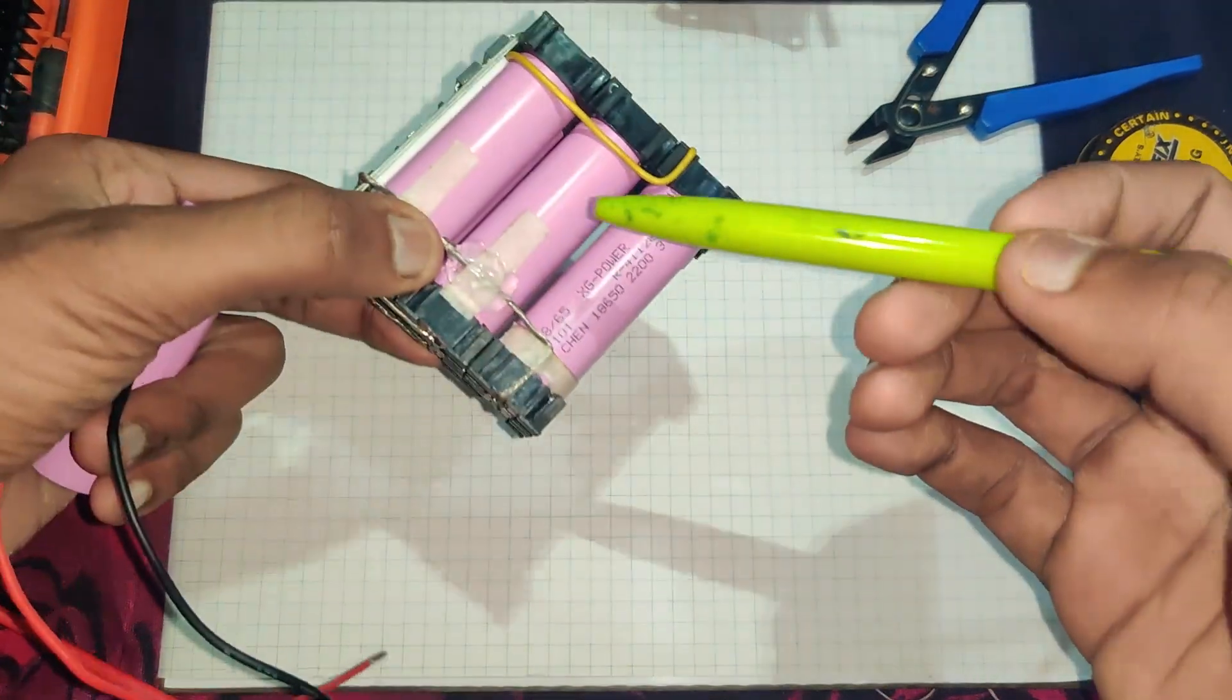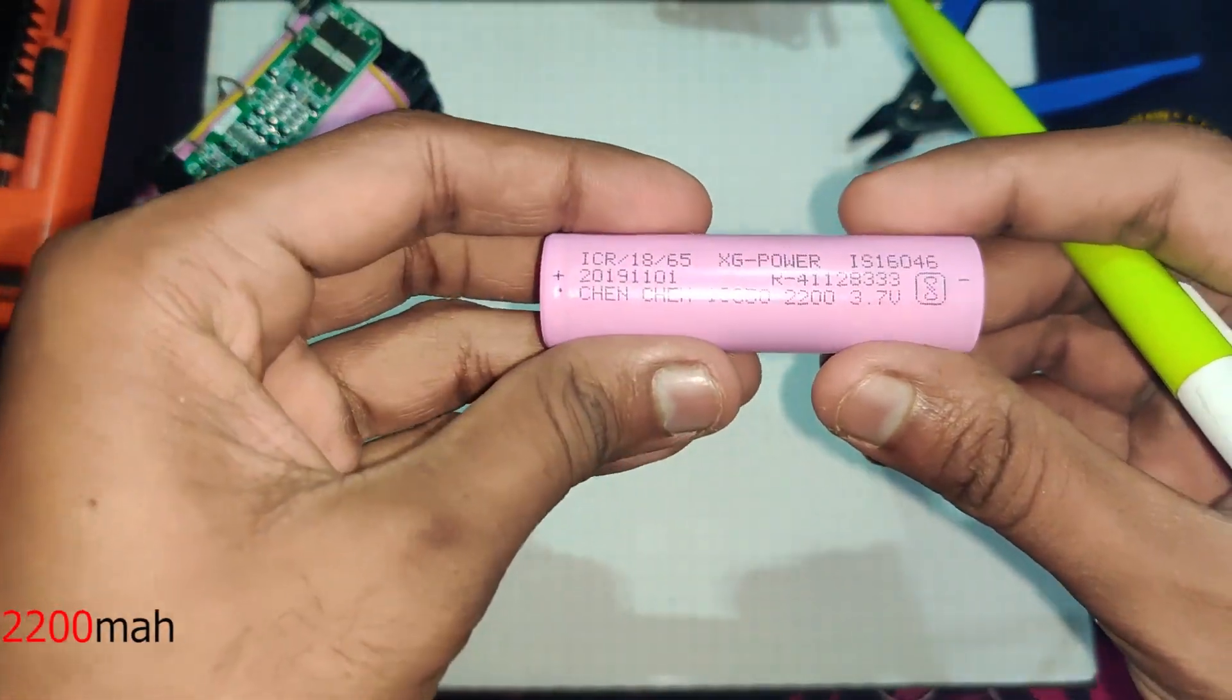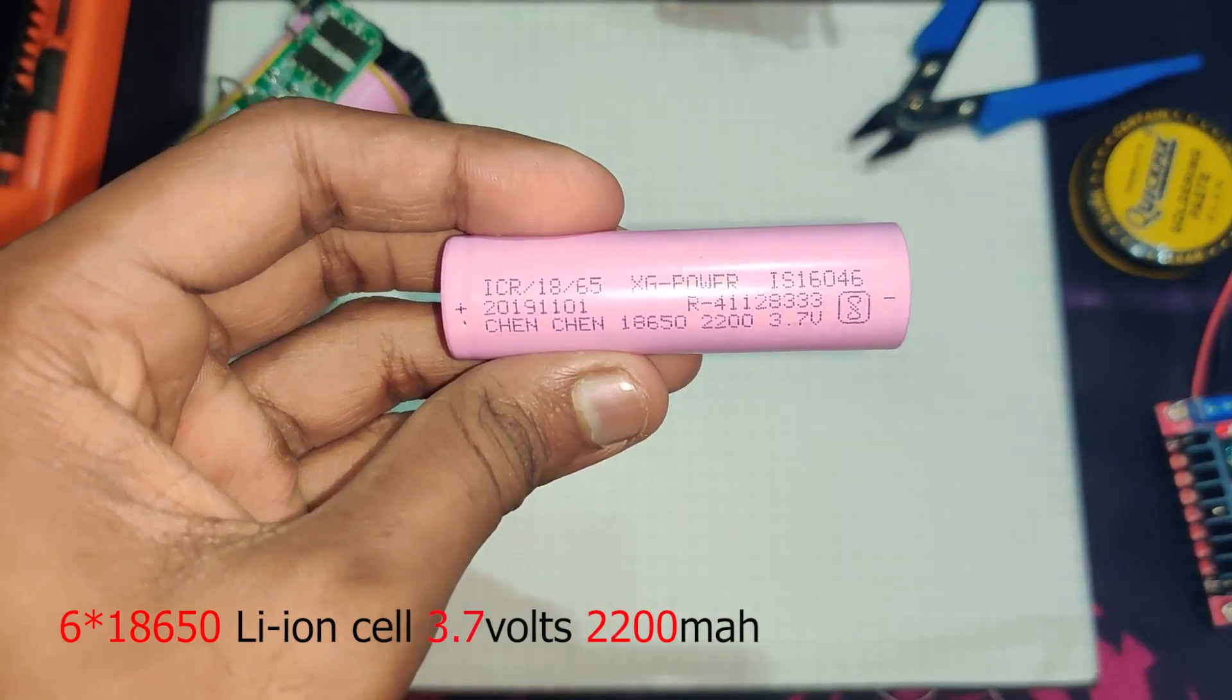To make this kind of lithium-ion battery pack, I am using six 3.7 volt, 2200 mAh capacity lithium-ion cells.